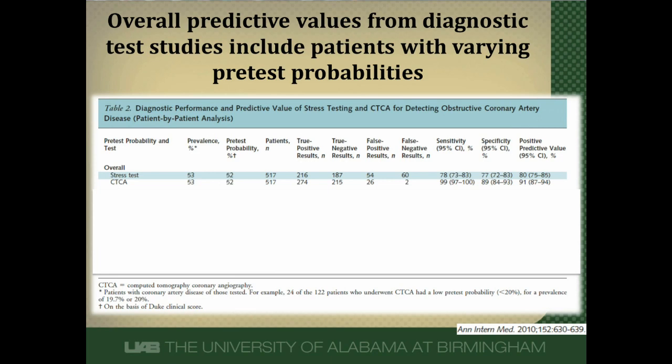Here's table two out of a study published in the Annals of Internal Medicine in 2010 that looked at the diagnostic test performance of stress testing and CT coronary angiography for detecting coronary artery disease. They used cardiac catheterization as the gold standard, and the study was done very well. What you can see here is the overall result of the study, including all the patients conglomerated together.